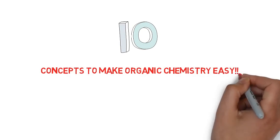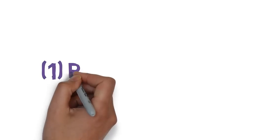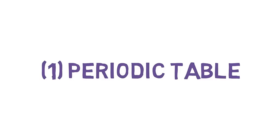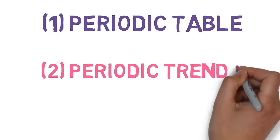These are the 10 concepts which will help you a lot in understanding organic reactions. First one is your periodic table. Second one is a concept of periodic trends.